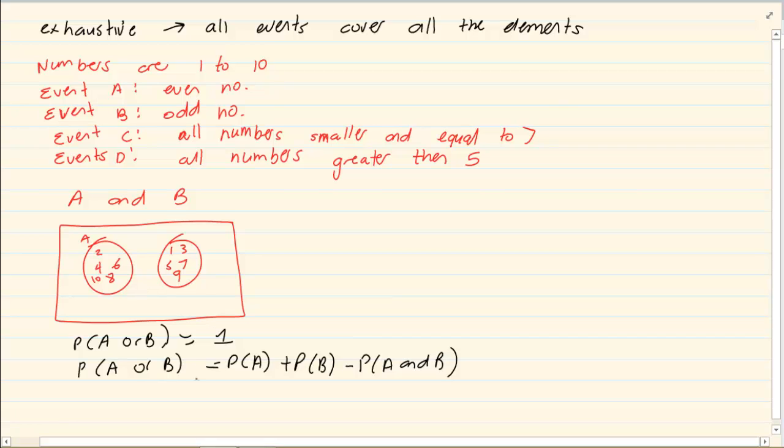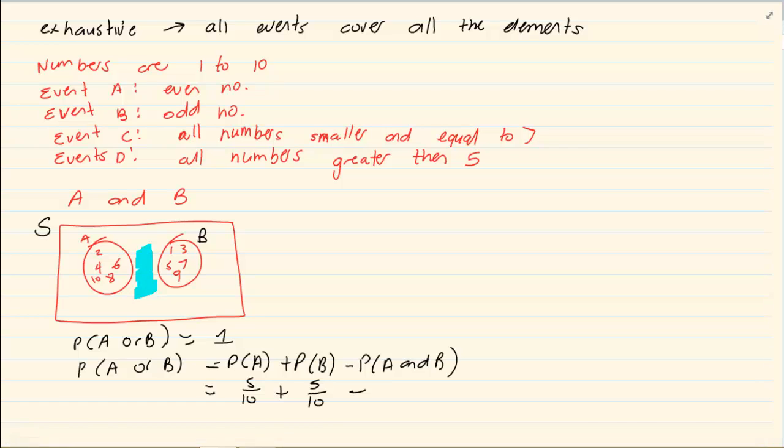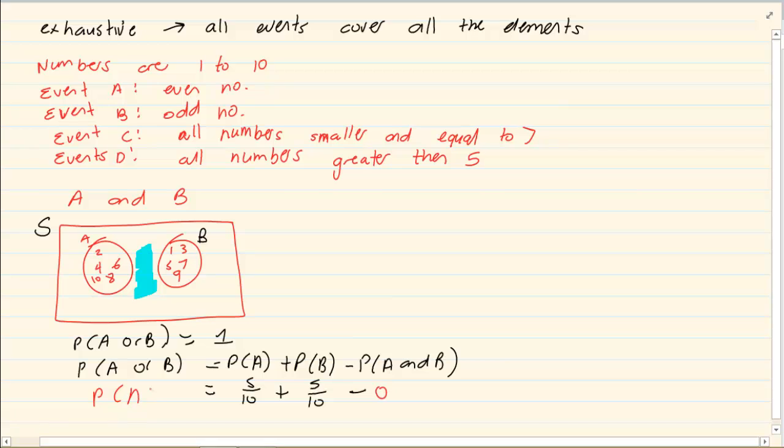Now in this one here we have P of A is 5 over 10, P of B is 5 over 10 minus P of A and B minus 0. So the P of A or B is equal to 1 which means that the events of A and B is exhaustive.